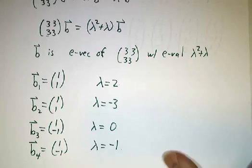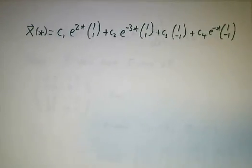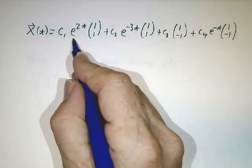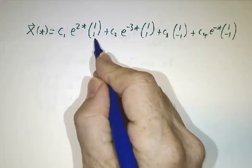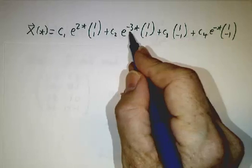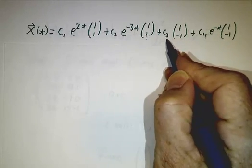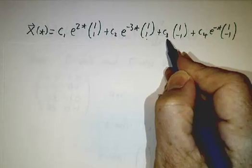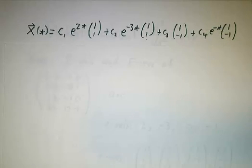And our most general solution is that x is going to be e to the 2t, that's the first eigenvalue, times the b from the first eigenvalue. e to the minus 3t, negative 3 was the second eigenvalue, b from the second. e to the 0t, that's a constant, b from the third. e to the minus t, b from the fourth.